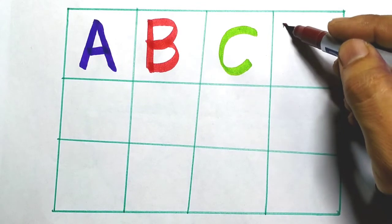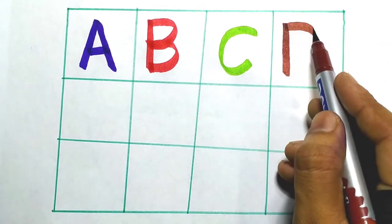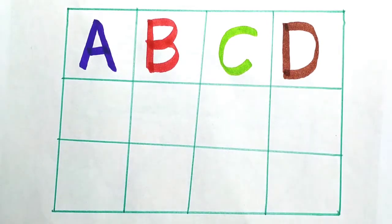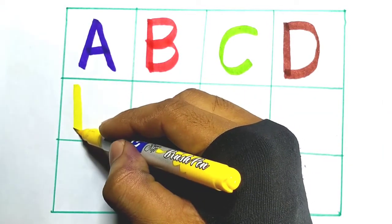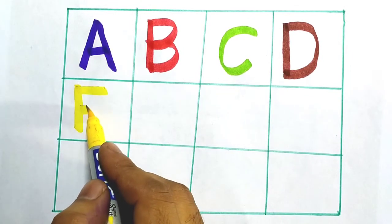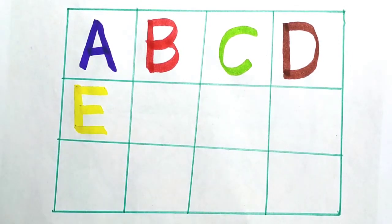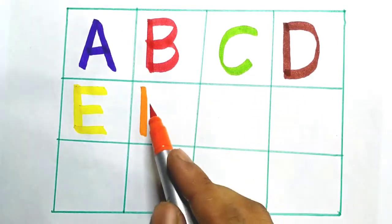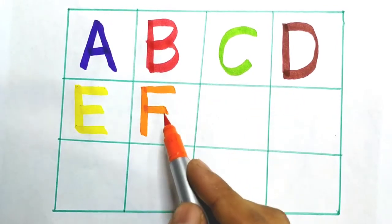D. D for bear. E. E for eagle. F. F for fish.